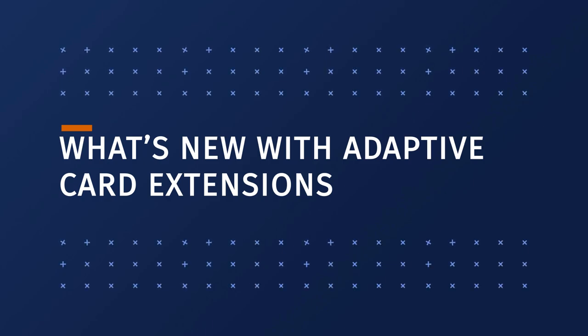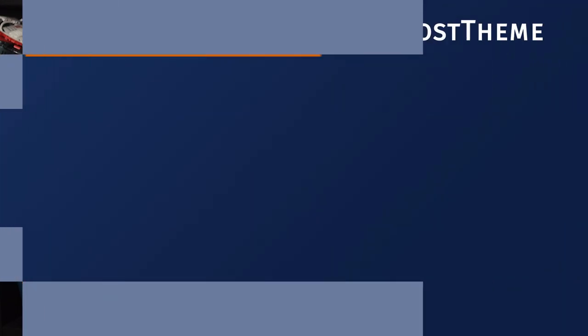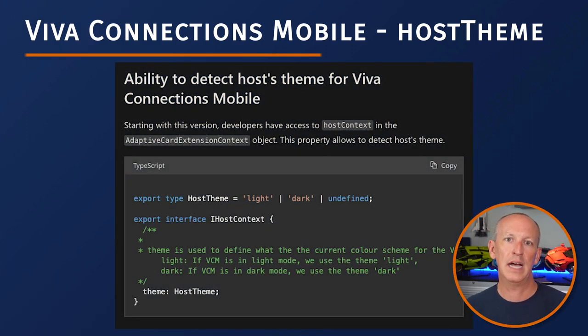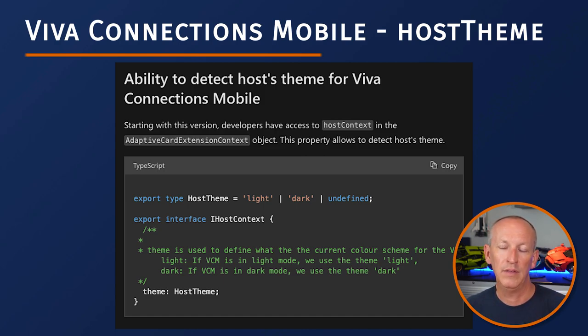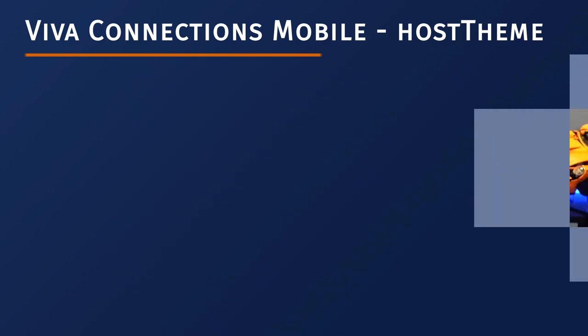That wraps up the dependency changes. Now let's look at updates Microsoft added to SharePoint Framework 1.18. This is primarily an update centered around adaptive card extensions or ACEs. The first update is the addition of a hostContext property to the ACE context object that developers can use to determine the current theme in the Viva Connections mobile client. This can return one of three values: light, dark, or undefined.